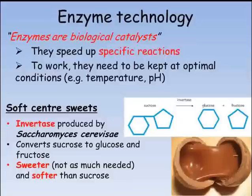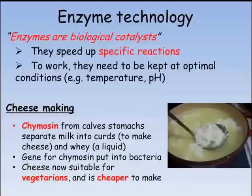Invertase is produced by genetically modifying a yeast, Saccharomyces cerevisiae, to produce the enzyme. Adding invertase to the sucrose before covering the hard caramel in chocolate allows the enzyme to slowly break it down, leaving a soft center in the middle.